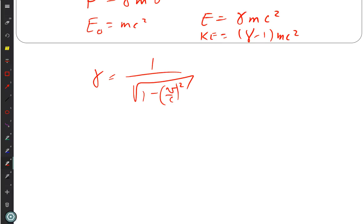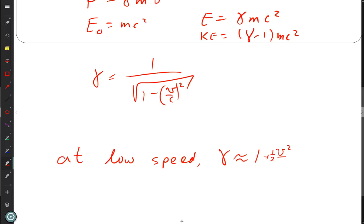But we did show that at low speed, it's like writing is a skill I lost. At low speed, gamma is approximately equal to one plus one half V squared over C squared. And so you can go through and do your calculations, but why spend your time? Why not just go easy?